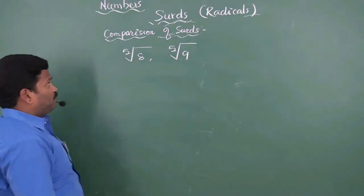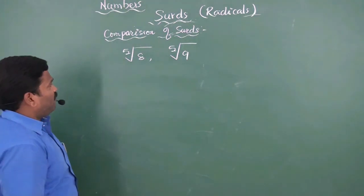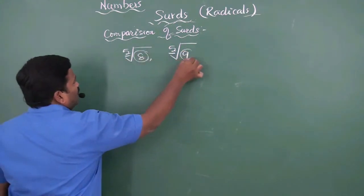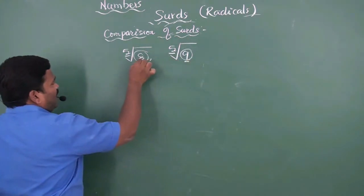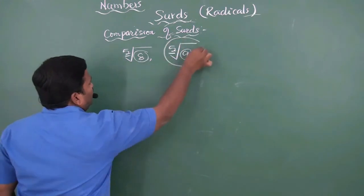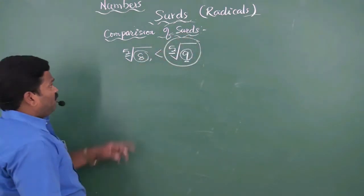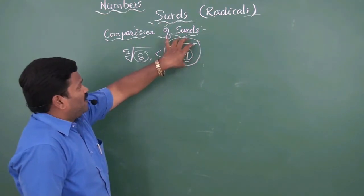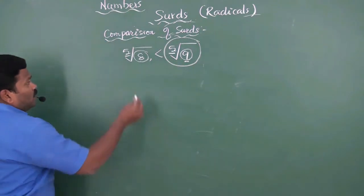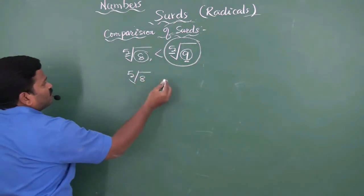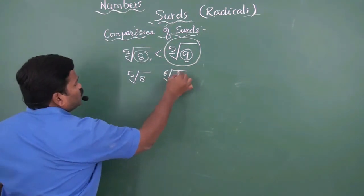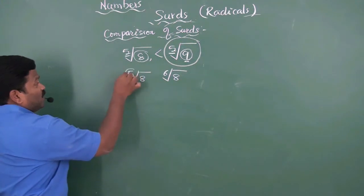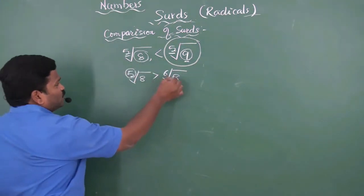In these two radicals, which is bigger and which is smaller? If the orders of the two radicals are the same, we compare their radicands. Since 9 is greater than 8, 5th root 9 is greater than 5th root 8. If orders are the same, compare their radicands — if the radicand is more, then the corresponding radical is greater.